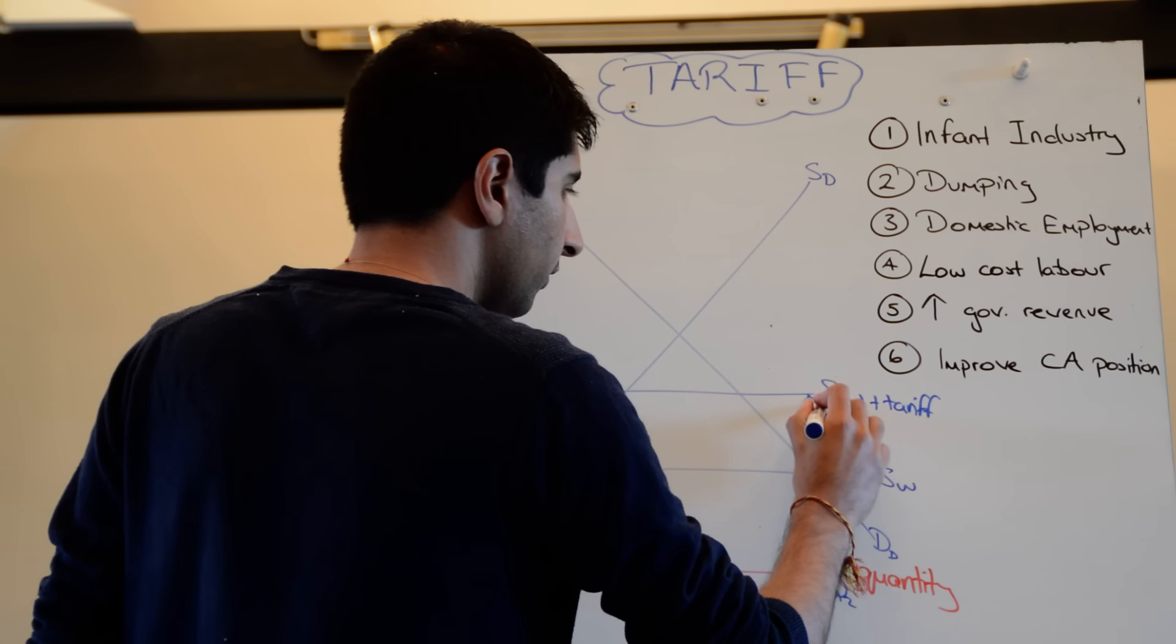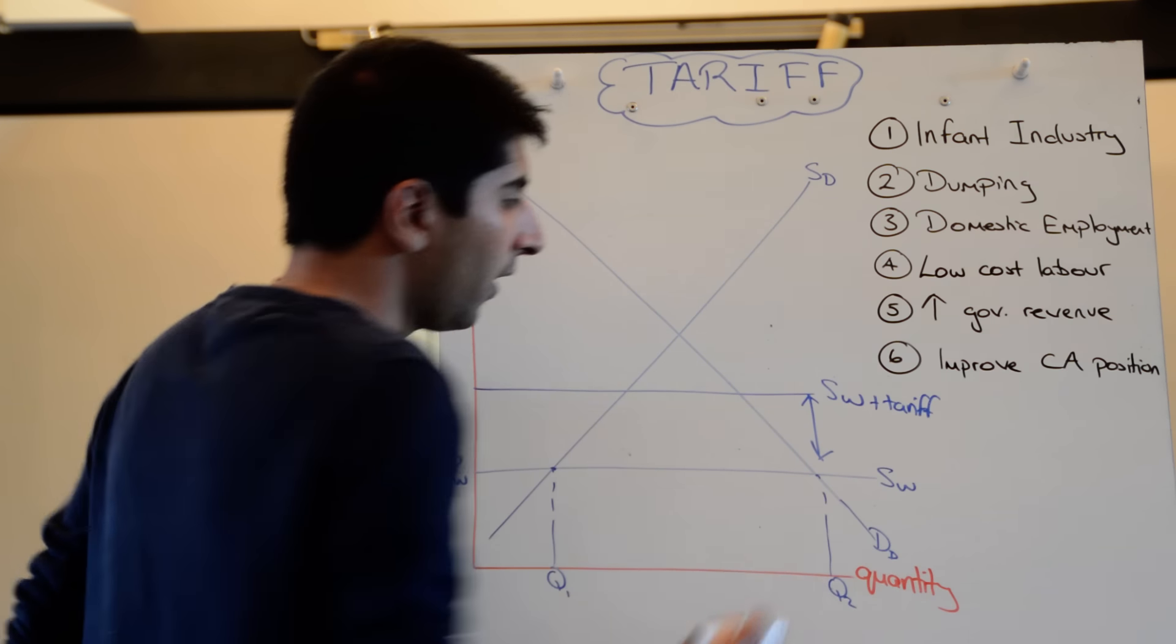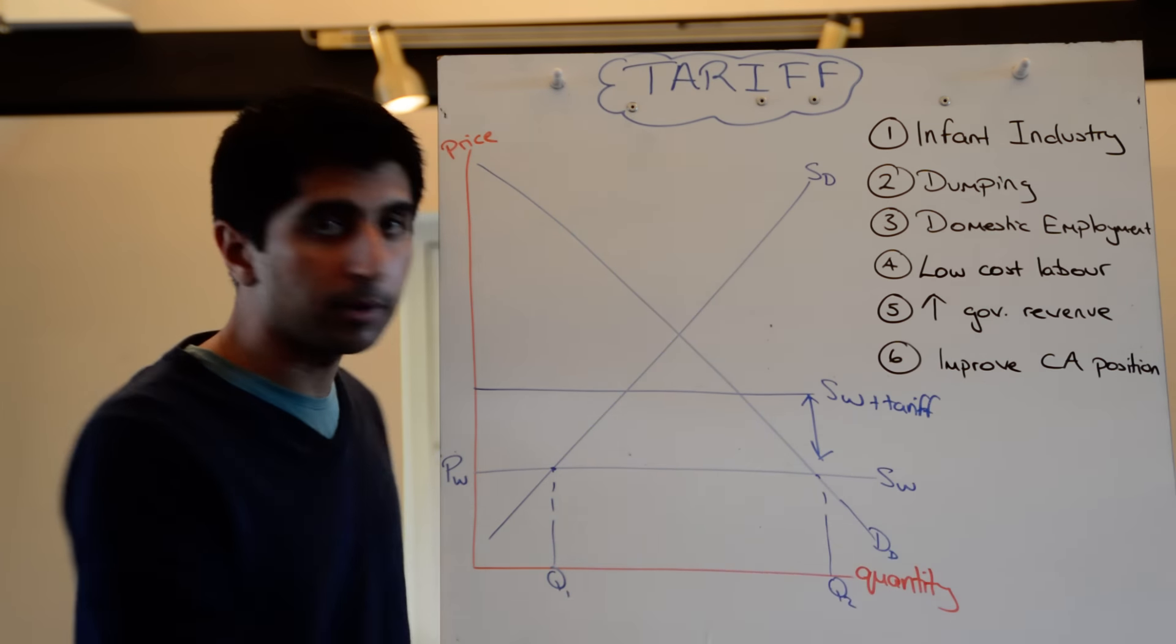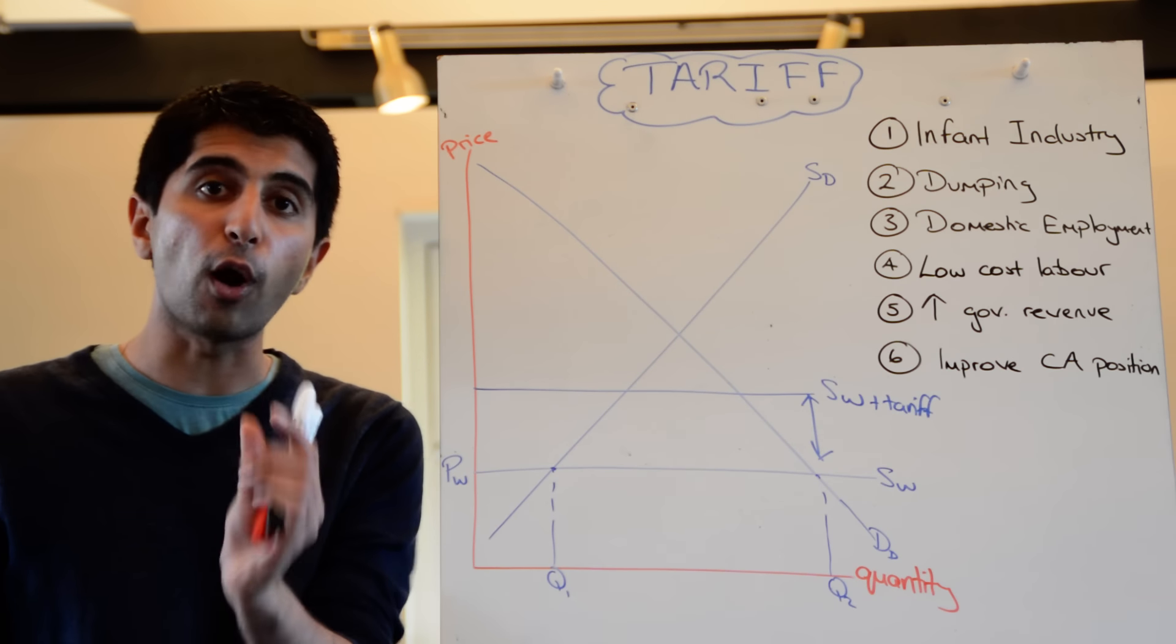So the SW curve shifts up to, let's call it SW plus tariff. So there it is shifting upwards. And the vertical distance between the two supply curves, between SW and SW plus tariff, is the actual value of the tariff.